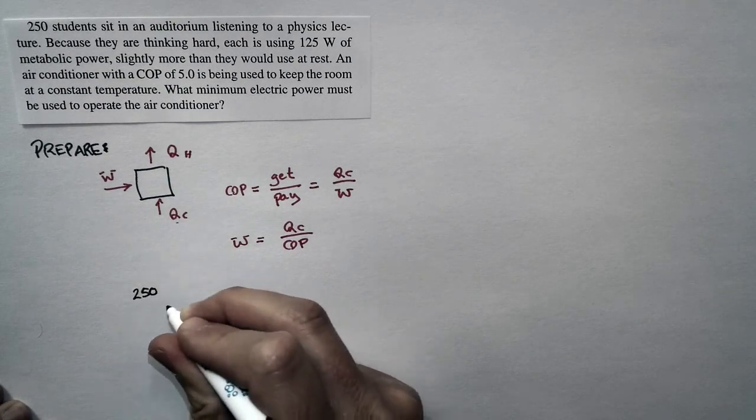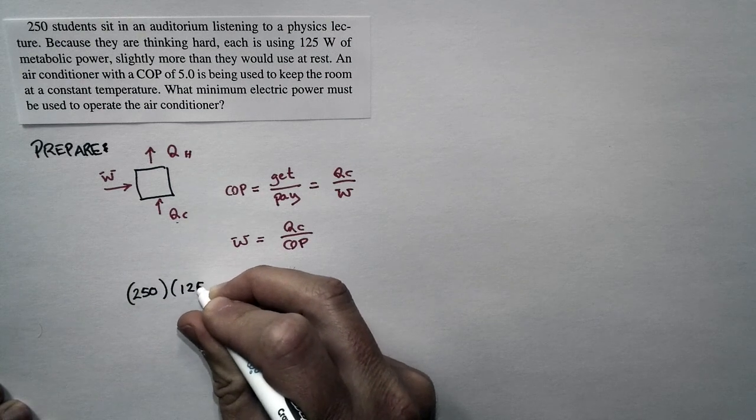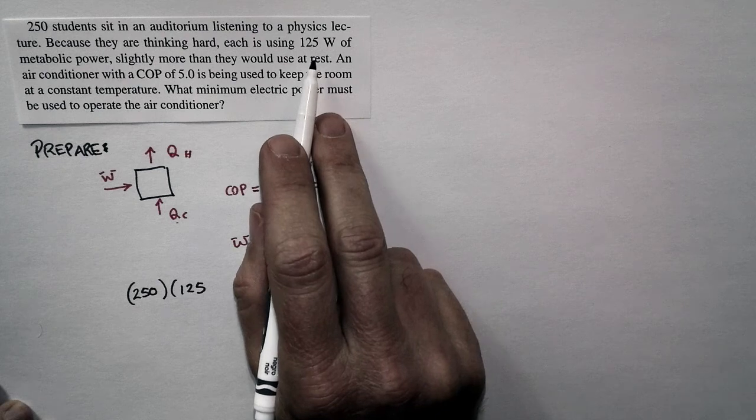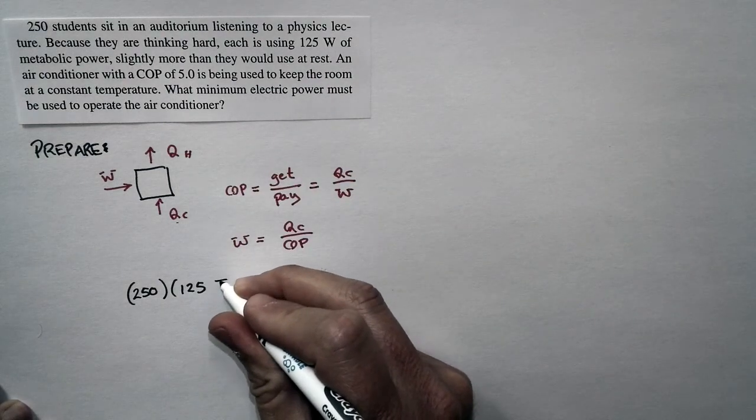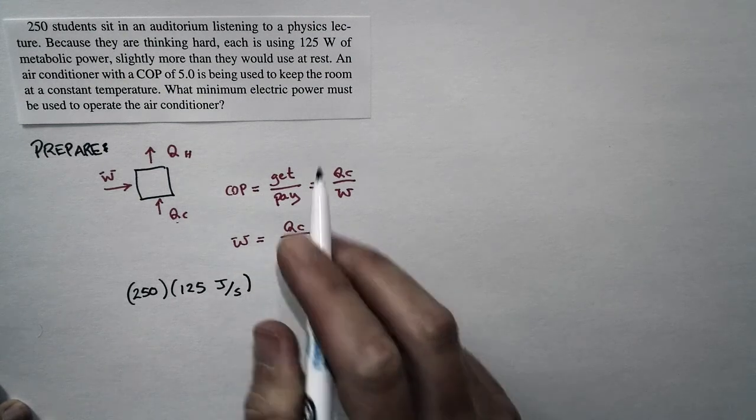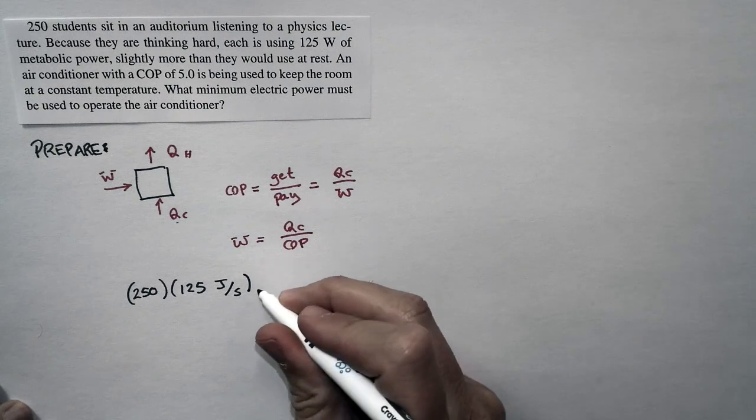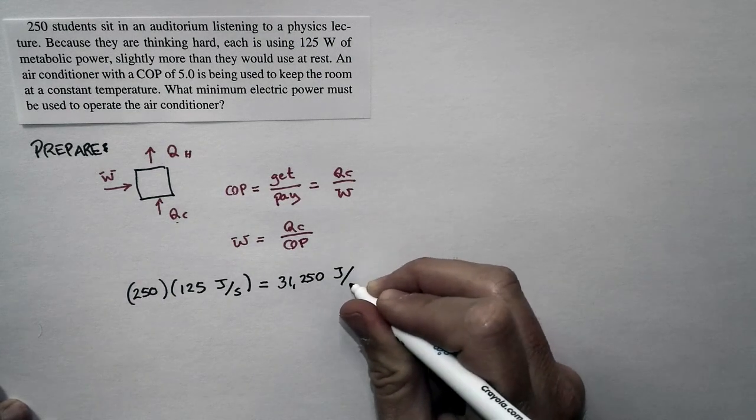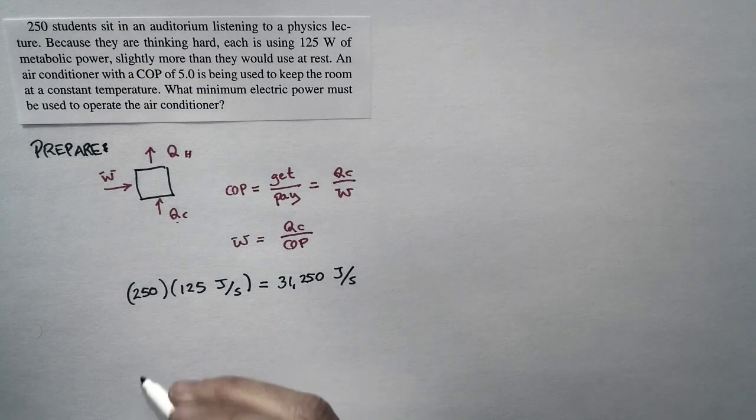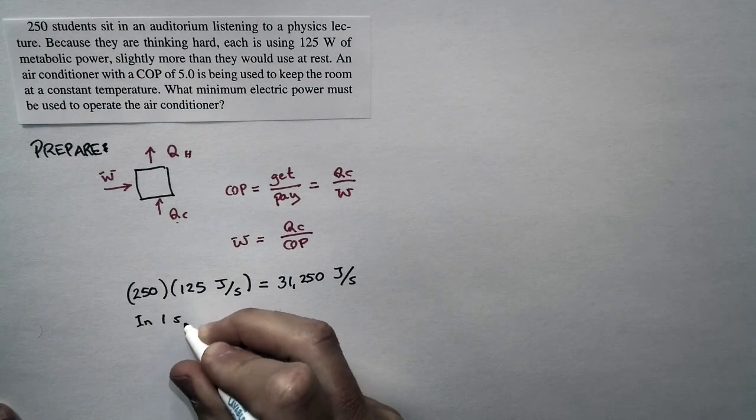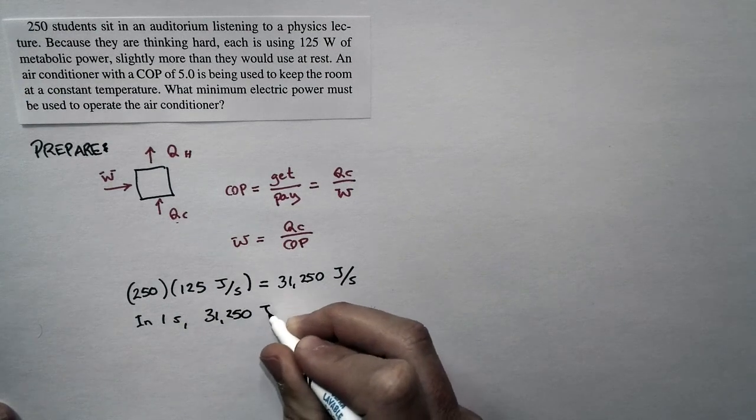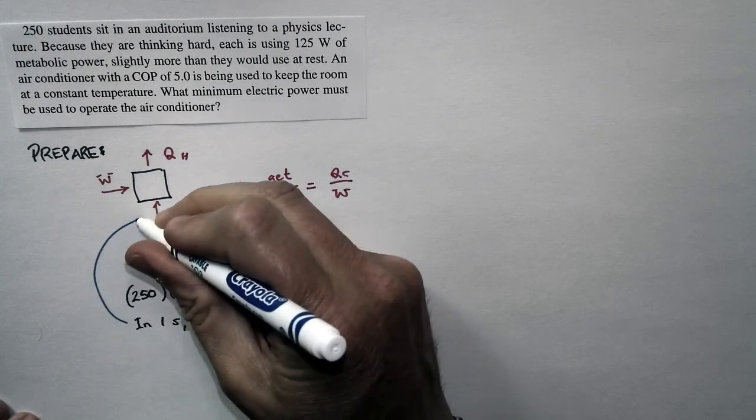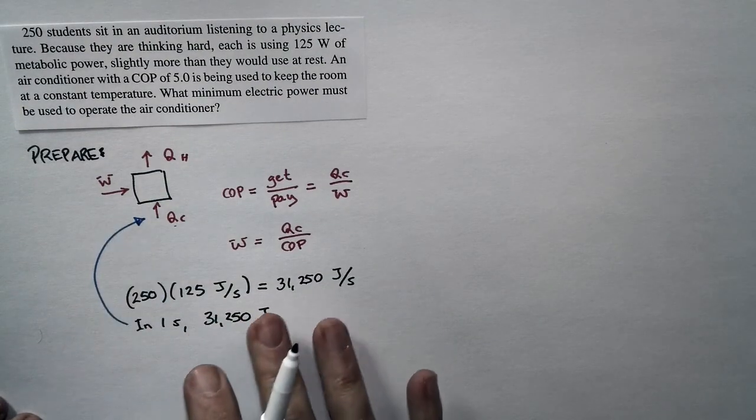I have 250 students. Each one of them deposits 125 watts of metabolic power into the room, basically because if you're using 125 watts of metabolic power, all of that turns into thermal energy and is just put into the room, and it's got to be taken out unless you want the room to warm up. That's 125 joules per second. So the students are responsible for putting 31,250 joules per second into the room. In one second, the students deposit 31,250 joules in the room, and this is the heat that forms the QC. That's the heat that has to be moved out into the great outdoors.